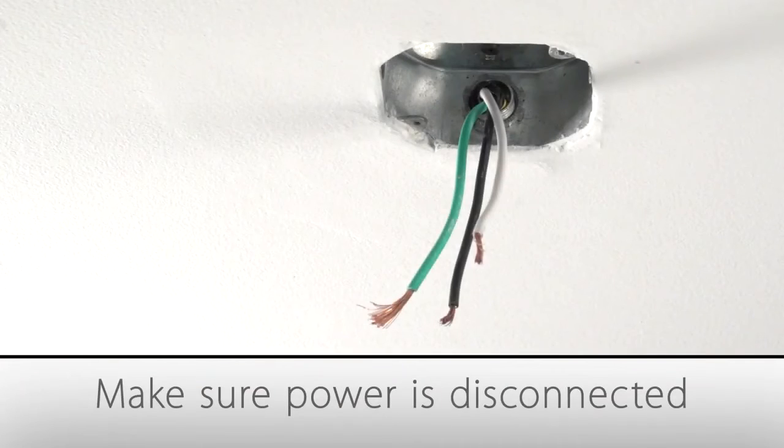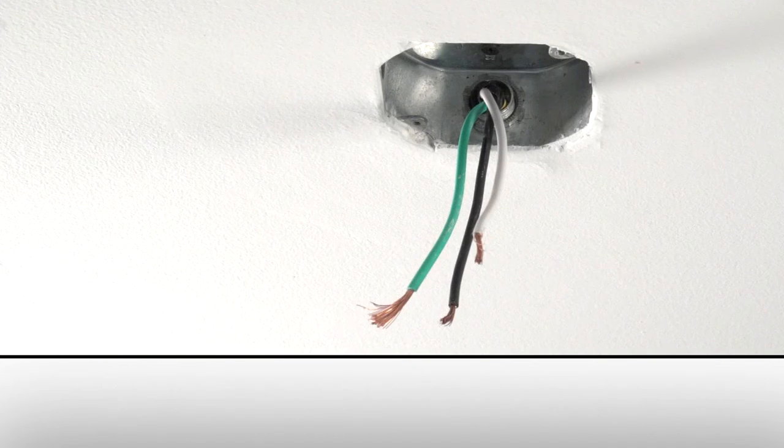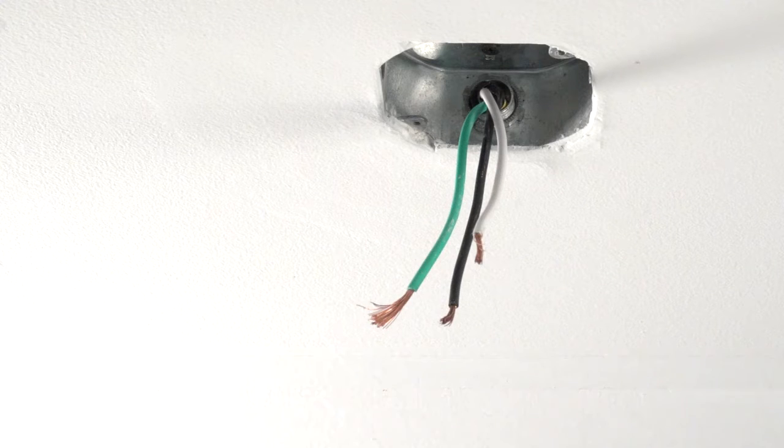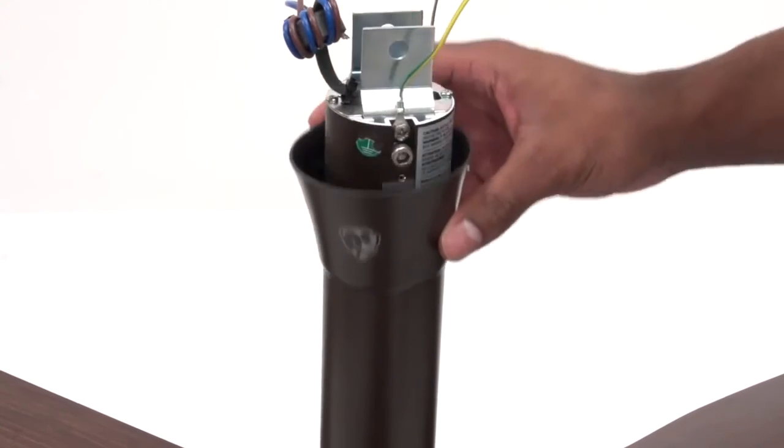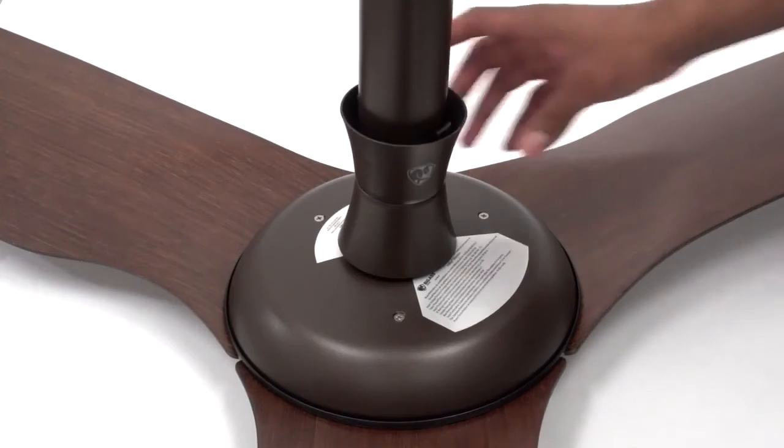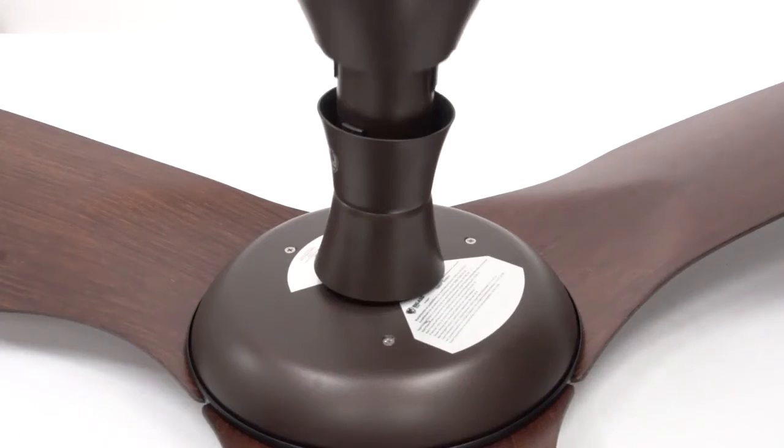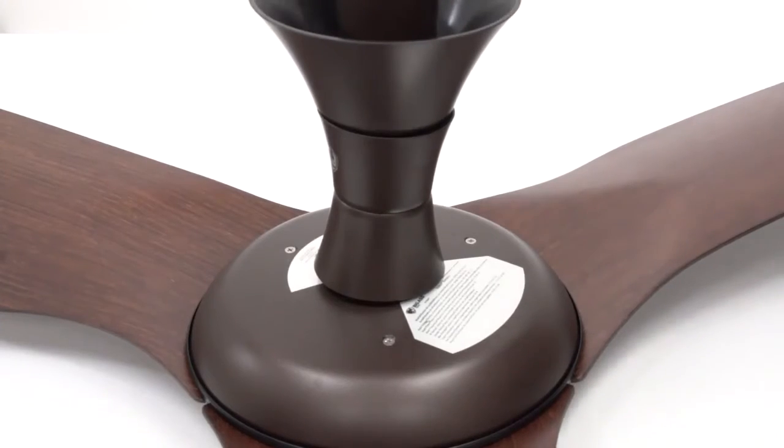Make sure that power has been disconnected from the fan install site. Ensure wiring has been properly routed to the site and that the supply wires are hanging from the ceiling opening. Begin with the fan in an upright position. Remove the protective covering from the extension. Slide the wiring cover and wiring cover trim over the extension tube, resting them on the fan hub.